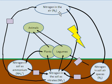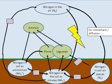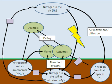Let's explain what the arrows do. We've got nitrogen in the air up here and nitrogen in the air down here — that's just movement of air, or diffusion of air into the soil. Then, how does the nitrogen as nitrates get into the plants? That's absorption by the roots. Nitrogen in plants getting into animals is by eating, and from animals into the soil is by death and decay.